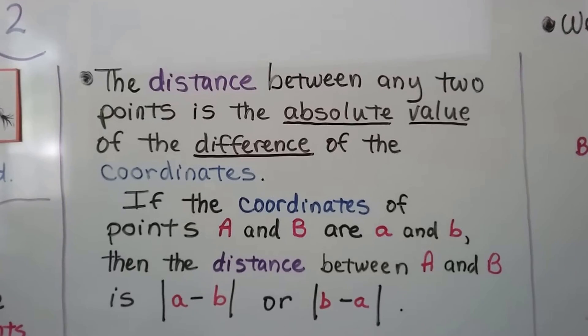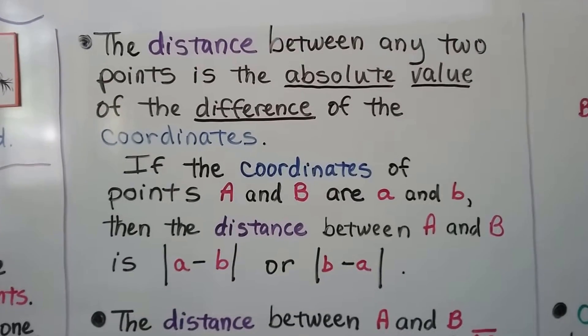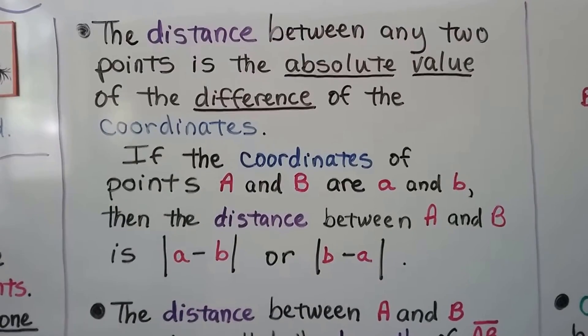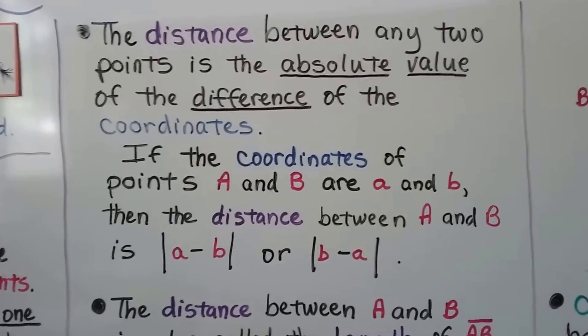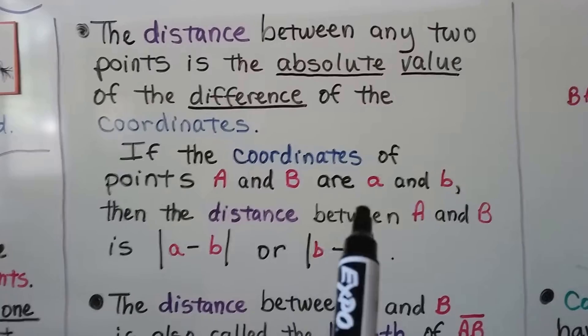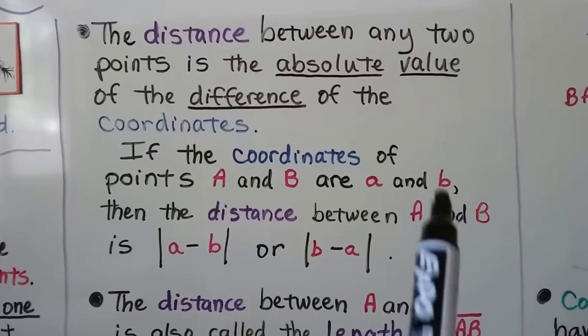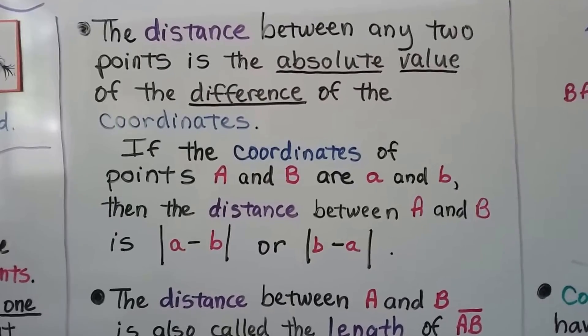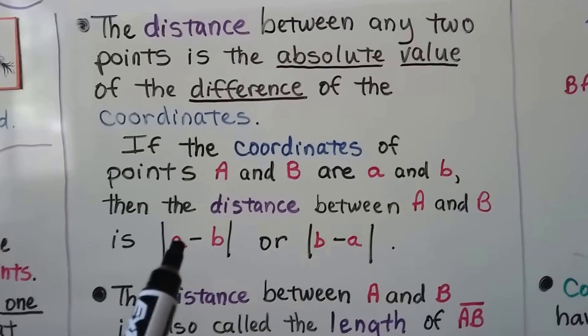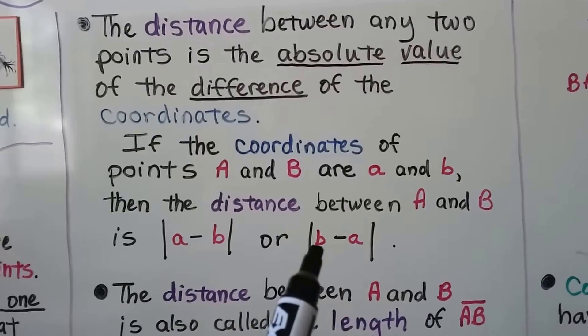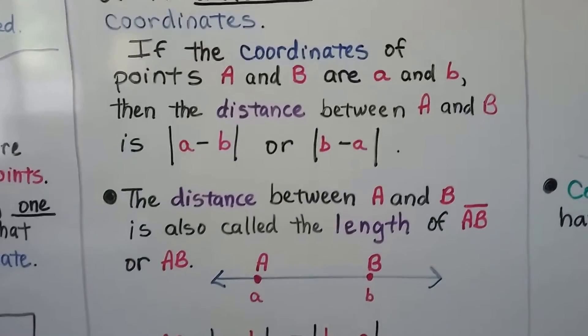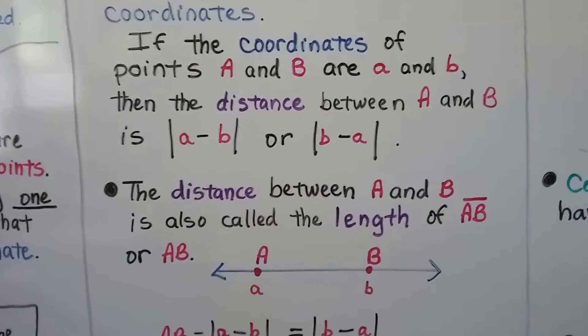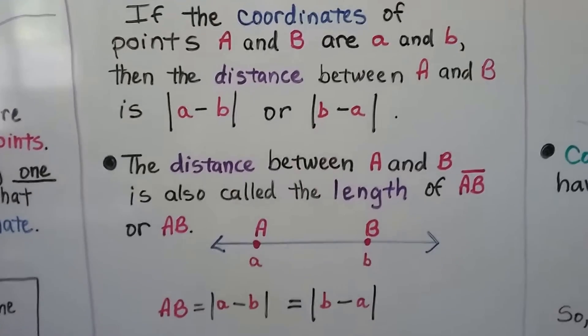The distance between any two points is the absolute value of the difference of the coordinates. If the coordinates of points A and B are this lowercase a and b, then the distance between A and B is the absolute value of a minus b or the absolute value of b minus a.